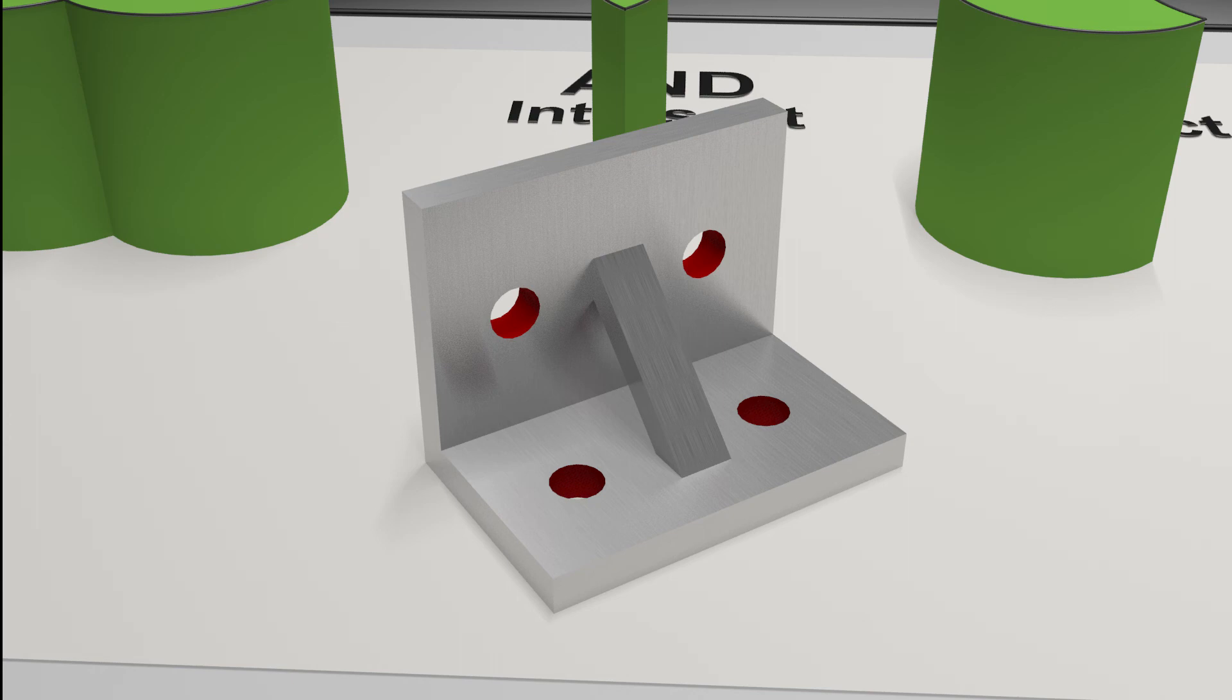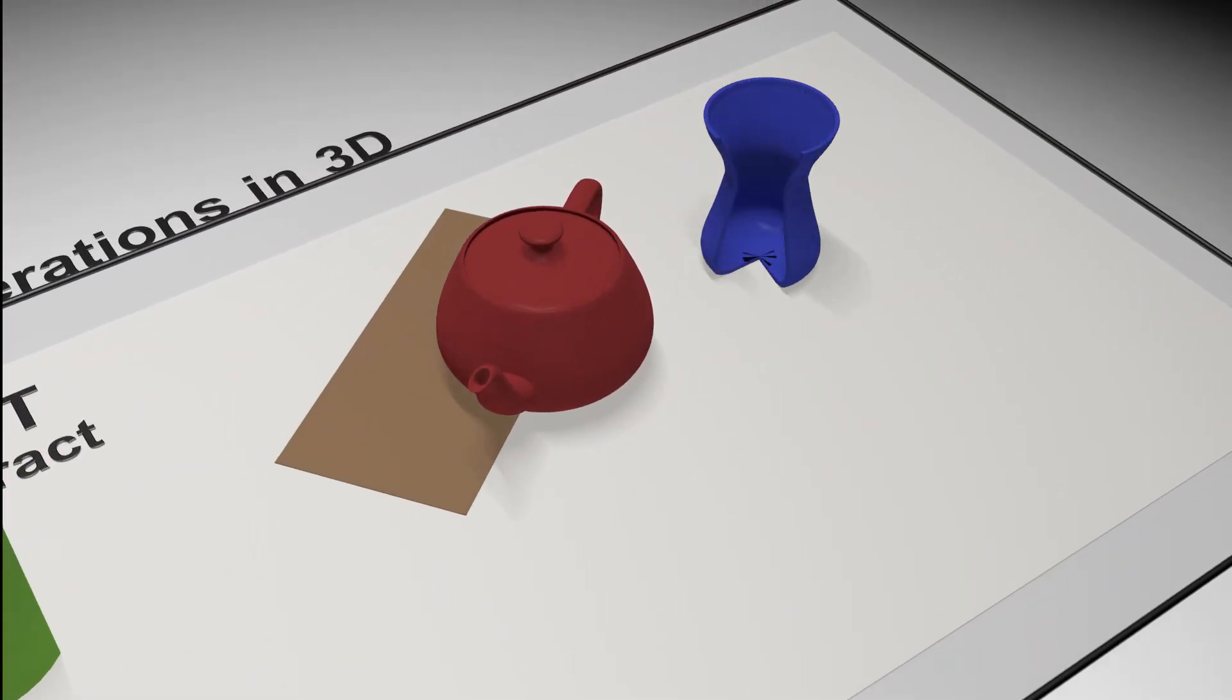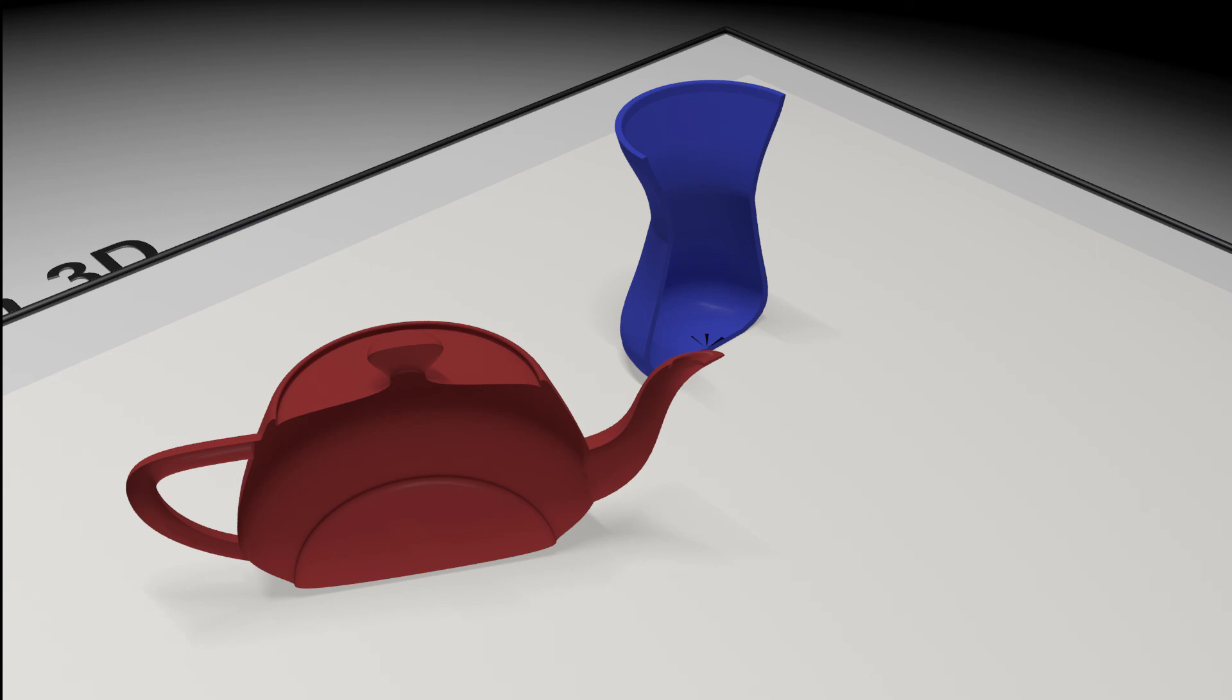However, just as a little side note, it's worth warning you at this early stage that some software, depending what you're using, will allow you to use Boolean on all modeling types, some will only restrict it to solid. But just be aware of what one you're actually using, as solid models will allow you to remove a chunk and it will leave inner surfaces and it will calculate it and figure it out, usually pretty nicely.